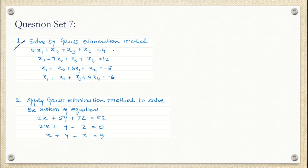We have covered the concept of linear equations. Right now, you cannot see the power of X1, X2, X3, or X4. So these are the linear equations and by Gauss elimination method, we are going to find the values of X1, X2, X3, and X4.